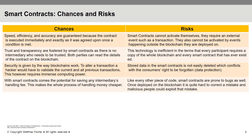One of the biggest perks of smart contracts is security and trust, but there are also other chances and risks of this technology. Behind smart contracts is no central authority deciding whether a contract is executed or not — they work completely autonomously, which is reflected in their speed, efficiency, and accuracy. The sense of trust comes from transparency on the blockchain, and it would take immense computing power for any hacker to change the current state of a blockchain and thus the smart contracts deployed on it.